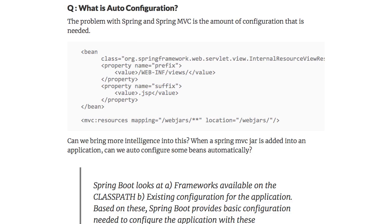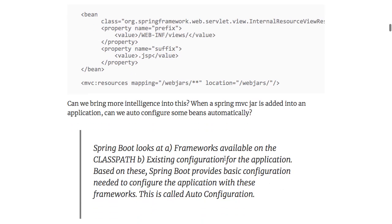What is auto-configuration? Auto-configuration is a feature of Spring Boot where it looks at the frameworks available in the class path and existing configuration for the application. It looks at both of these and decides what configuration is needed and what can be automatically configured. If it sees a JPA jar on the class path, it automatically configures an entity manager and a data source. If it sees a Spring MVC jar on the class path, it automatically configures a dispatcher servlet, an error page, and an error response.